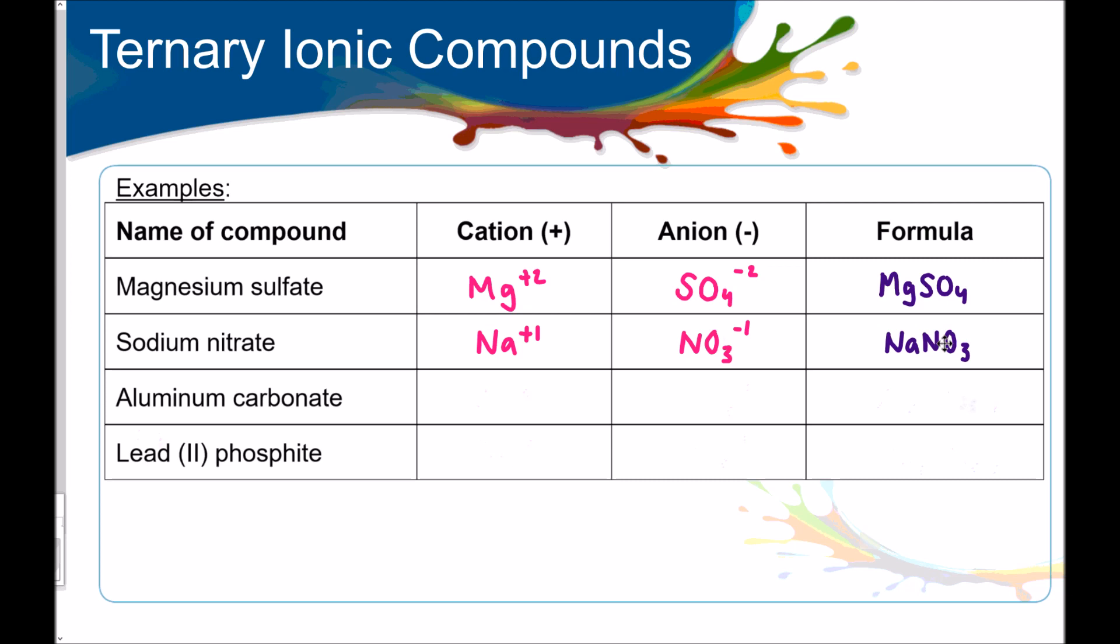Aluminum carbonate. Aluminum's oxidation number is plus three. Carbonate's oxidation number is negative two. So, we are gonna have to criss-cross these. The three is going to become the subscript for carbonate. And the two is going to become the subscript for aluminum. So, we're going to have Al2CO3 in parentheses with the three outside. Let me show you how this works.